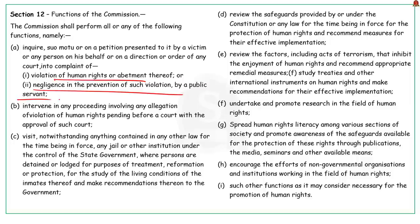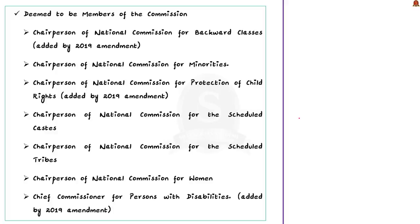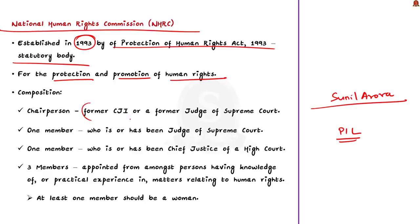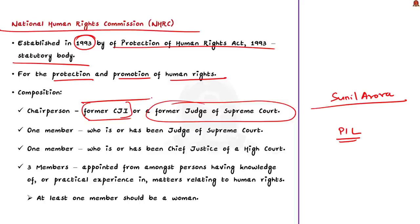In addition, it also makes recommendations for effective implementation of such treaties and international instruments on human rights to the government. Most importantly, the Act was amended in the year 2019. This amended the composition of NHRC. Accordingly, the commission consists of a chairman and members where a major change has been made in the appointment of chairperson. Because now, the former Chief Justice of India as well as the former Judge of the Supreme Court are eligible to be appointed as chairperson. Whereas previously, that is before the amendment, the Chief Justice of India alone was qualified to be appointed as chairperson.